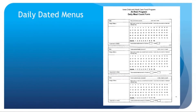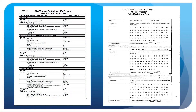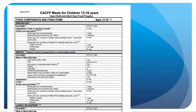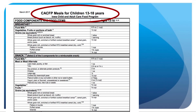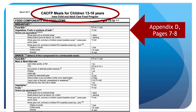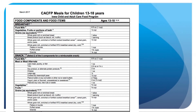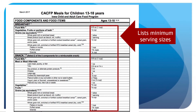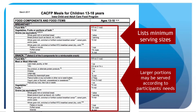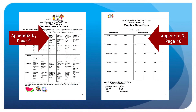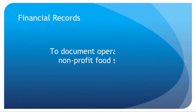Record the total number of meals and snacks delivered or prepared. Maintain daily dated menus for each at-risk meal or snack to document compliance with the meal pattern. The meal pattern chart for children ages 13 to 18 can be found in Appendix D. The meal pattern lists minimum serving sizes that must be provided, and larger portions may be served according to the participant's needs.